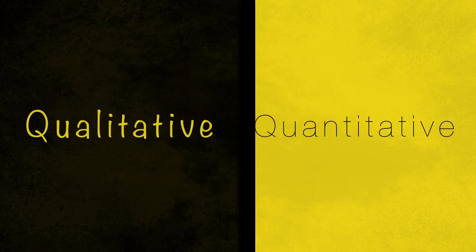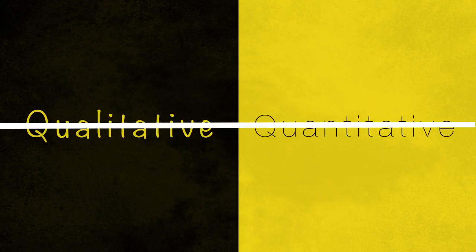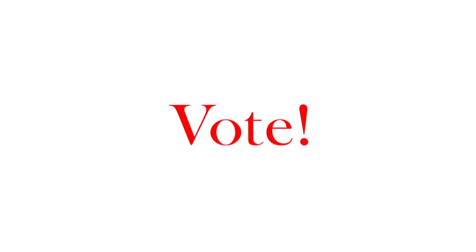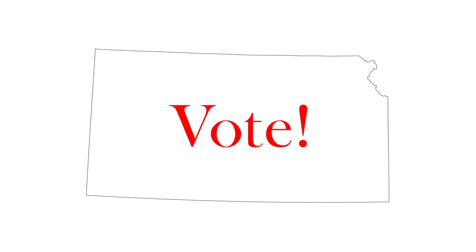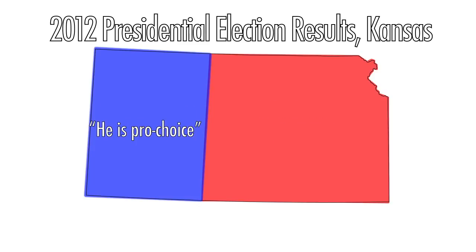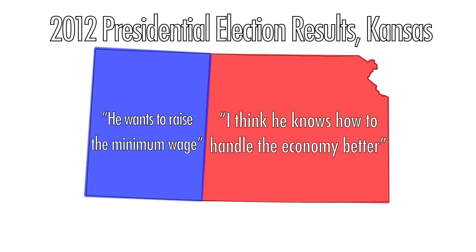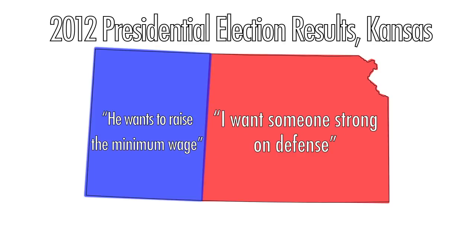While these two methods may appear to be distinct from one another, they can actually complement each other quite well. For instance, perhaps you are interested in a recent presidential election. Quantitative research might involve surveying a random sample of voters or using the actual voting results to discern underlying patterns from the data. Qualitative research might involve interviewing voters to gain a better understanding of their motivations and behaviors during the election.